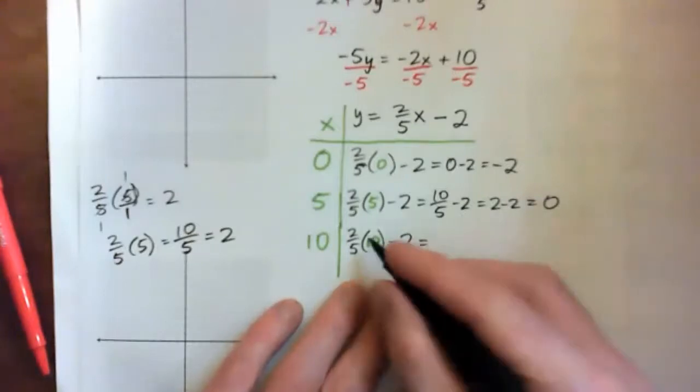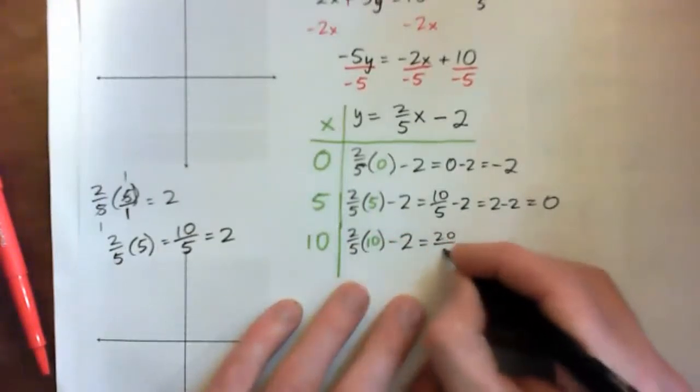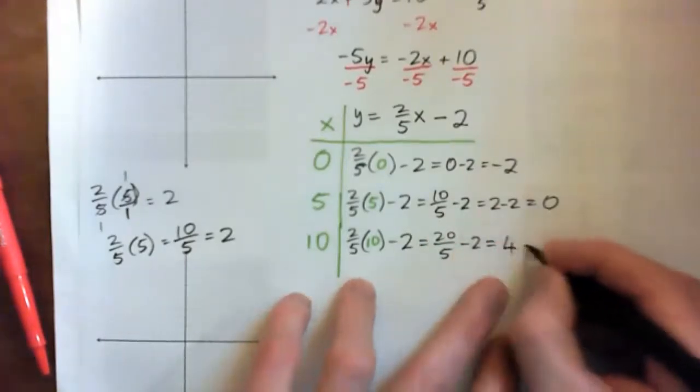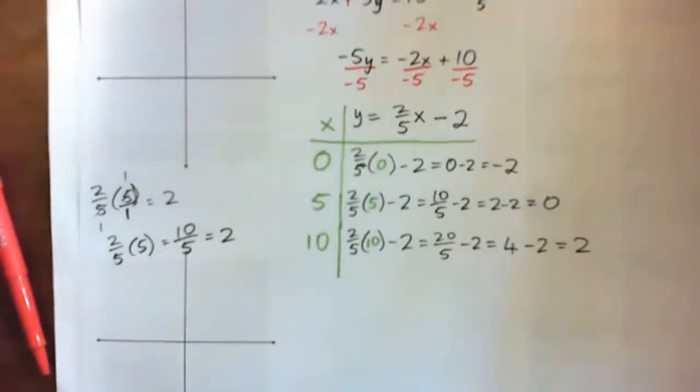2 over 5 times 10. 2 times 10 is 20 over 5 minus 2. And that's 20 over 5, 4 minus 2. And that's 2. So, that's the hard part. All the hard part is done. But is that confusing? Are we all right with that? Yeah. All right, cool.